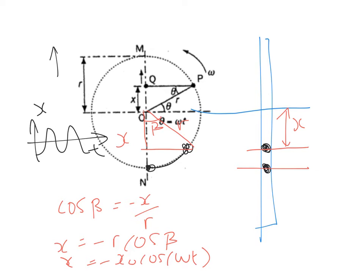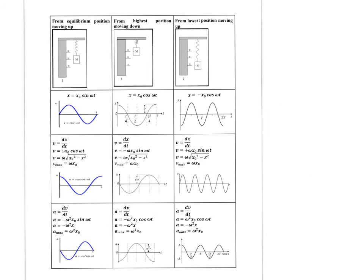To summarize the three cases: starting from the middle going up gives a sine equation x = x₀ sin(ωt); starting from the highest point going down gives a cosine equation x = x₀ cos(ωt); and starting from the lowest point going up gives a negative cosine equation x = -x₀ cos(ωt). Make sure you use the correct equation for each case.